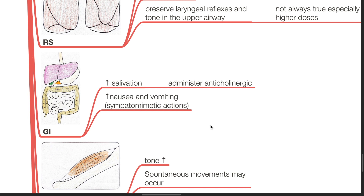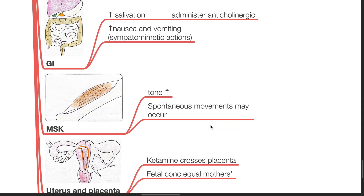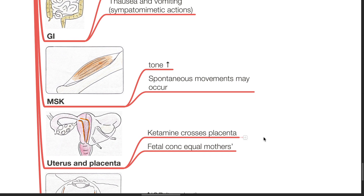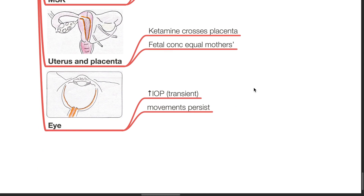There is increase in muscle tone and spontaneous movements may be observed. Uterus and placenta: ketamine crosses the placenta and the fetal concentration equals that of the mother's. The eye: there is increase in intraocular pressure and eye movements persist.